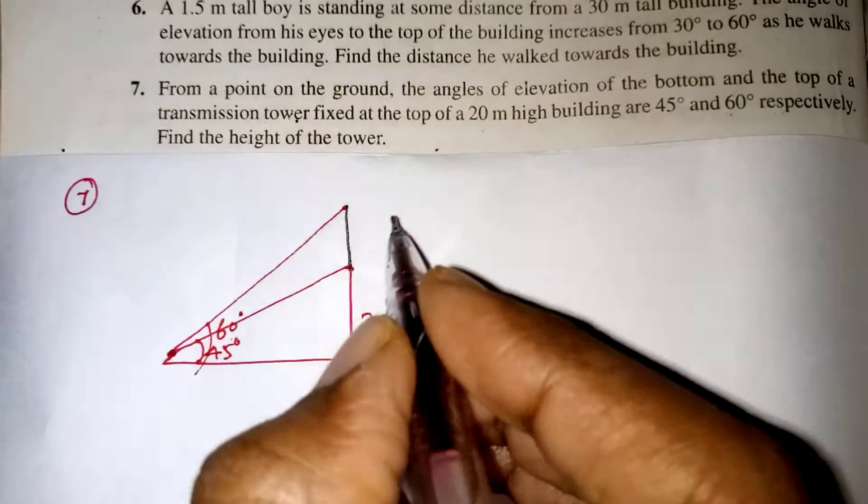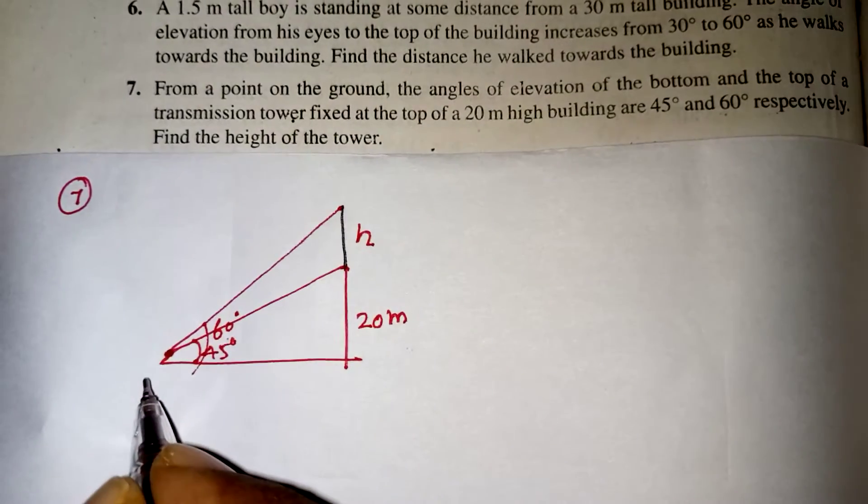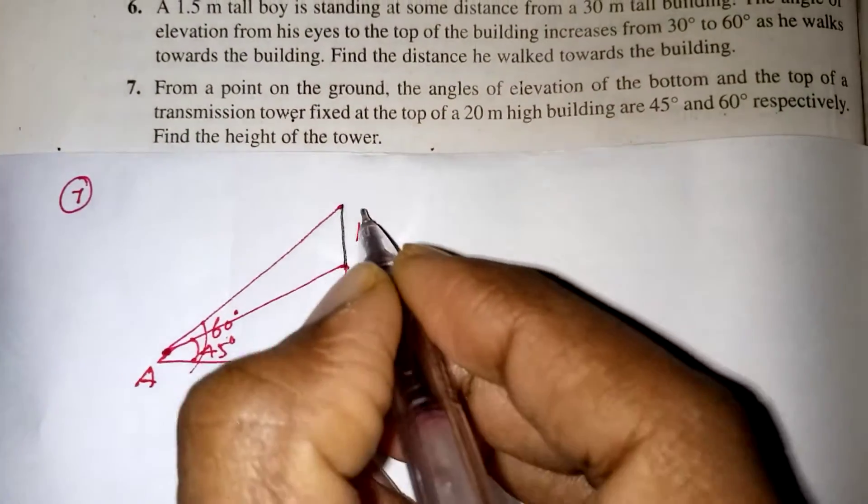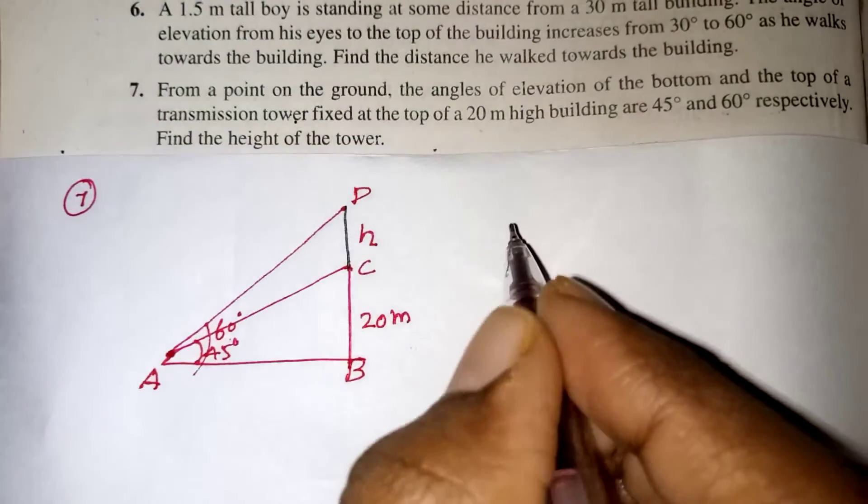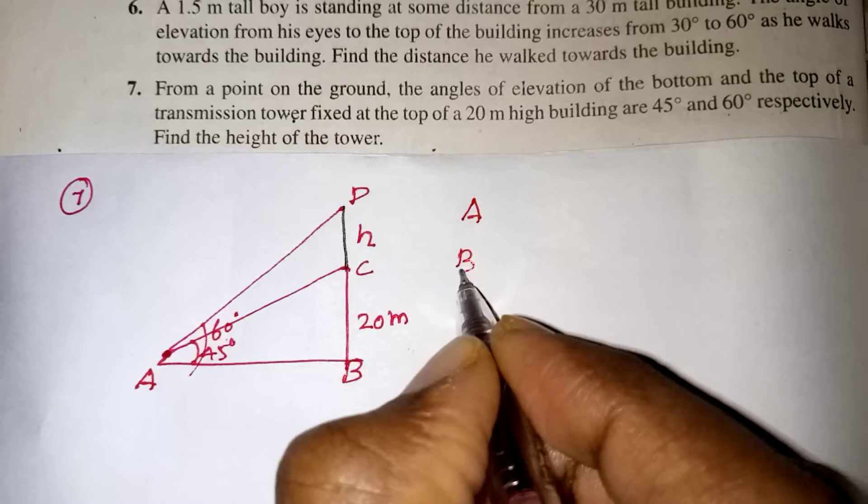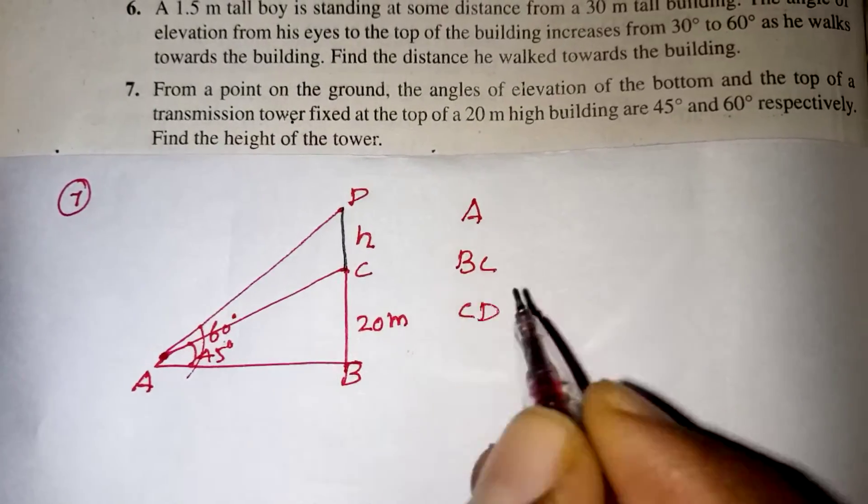Find the height of the tower, this alone they are asking you to find out h. Now let us take this is A, B, and C, D. First we have to write it what we have taken.